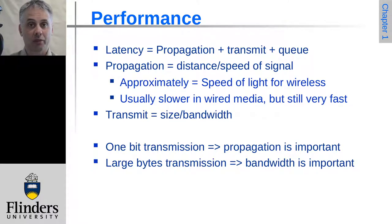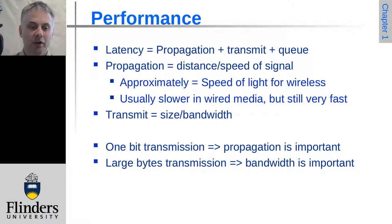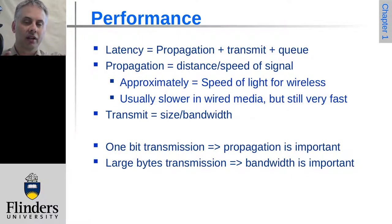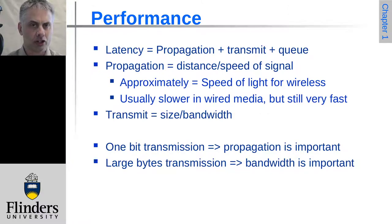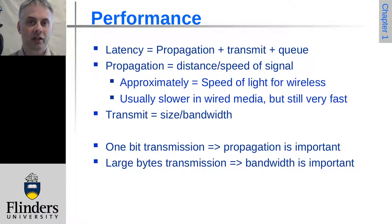If you're sending communications to Mars, the propagation delay can be minutes even at the speed of light, so in that case propagation delay will swamp the transmission time. On the other hand, if you need to transfer gigabytes of data, the propagation delay is probably not very important because there are so many bits in transit. For short communications, propagation will tend to dominate; for large amounts of data, it will be the bandwidth and transmission time that dominate.